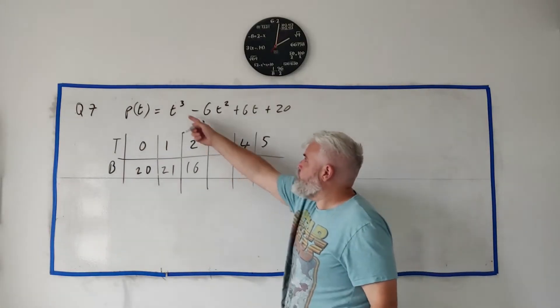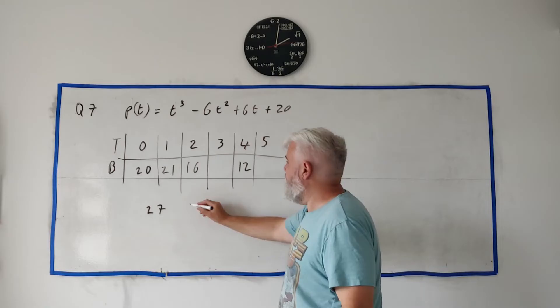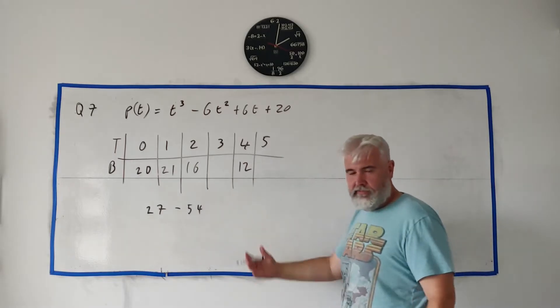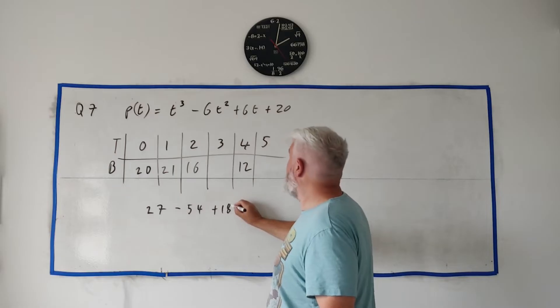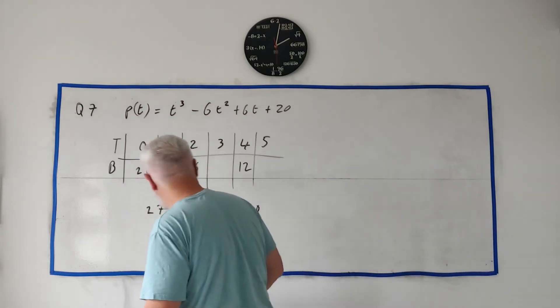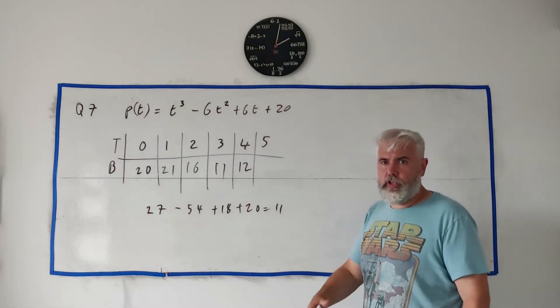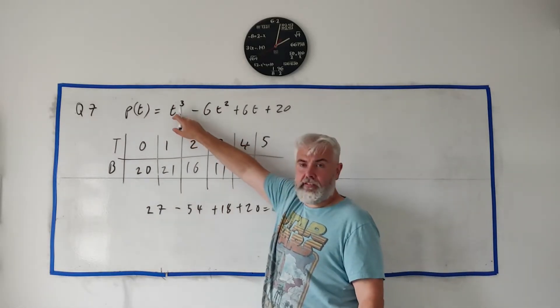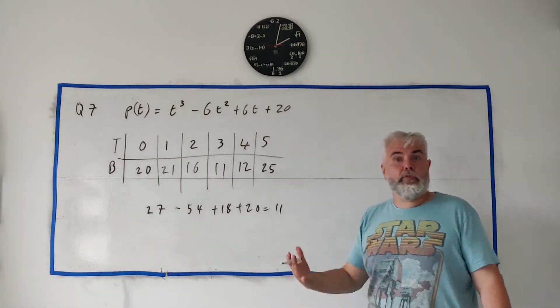Do this slowly, write out everything so the examiner can see. With 3 here, fill 3 in: 3 times 3 times 3 is 27, minus 3 times 3 is 9, 9 times 6 is 54, and 3 times 6 is 18 plus 20. Do all this on a calculator and we would get 11. Do it twice, do it three times in a calculator, make sure you get the right answer. Again, put 5 in here, and we would get at the end 25. So that's part one.